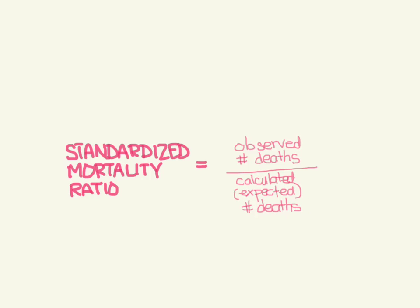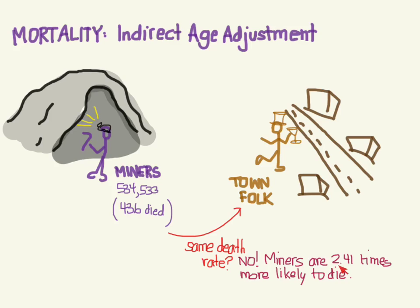Using the numbers from the prior example: we had seen 436 deaths in the miners, but we had calculated 181 expected deaths. If you do the math, this comes out to 2.41, or 241%. What this means is that the miners are 2.41 times more likely to die than the townies are — so the miners are almost 2.5 times more likely to die than the town folk are. So this number is our SMR. We know the town folk's crude mortality was 10.9 per 1,000. Given this, can we make an estimate of the mortality of the miners?